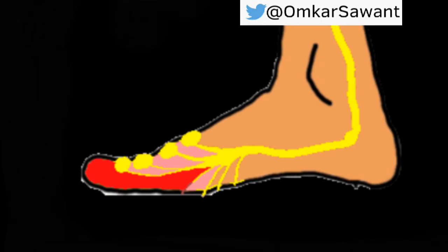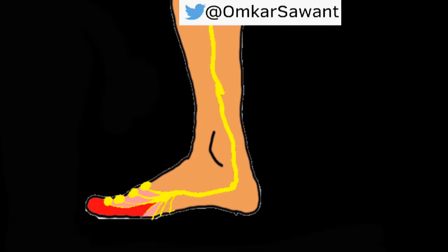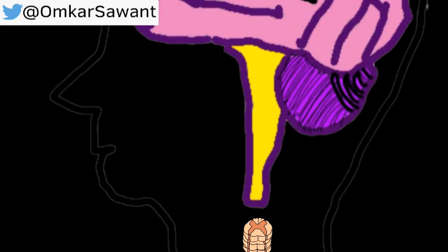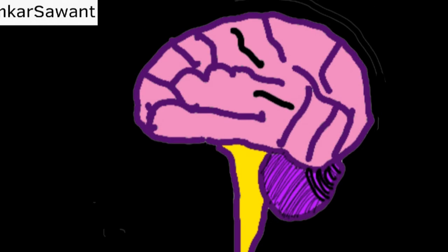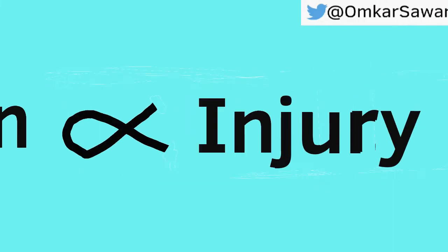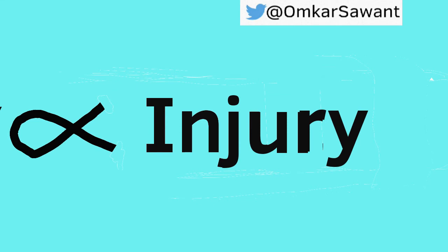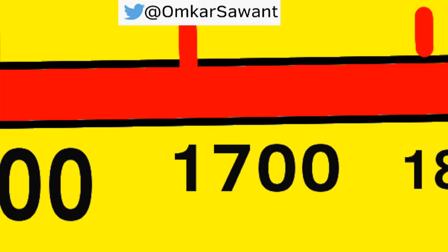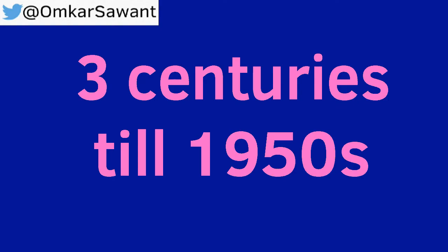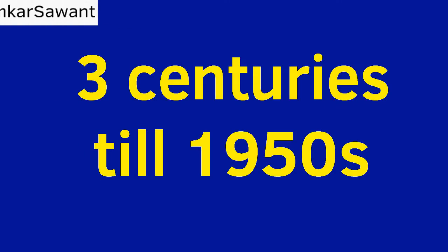Injury activates the pain receptors and the sensation is transmitted to the brain via the spinal cord. Pain experience was proportional to the injury and damage caused. This theory was accepted for three centuries, up until the 1950s.